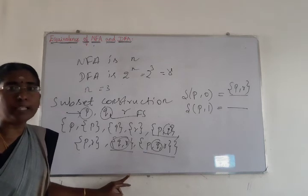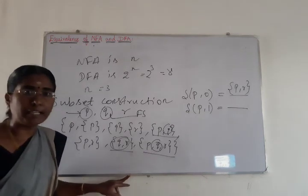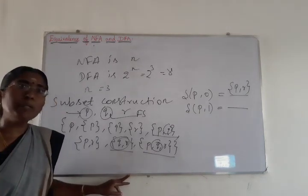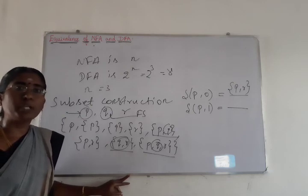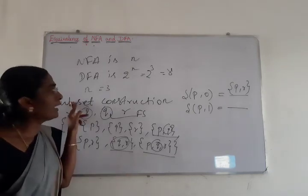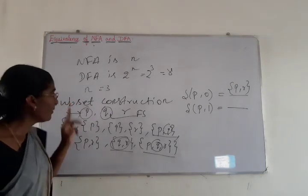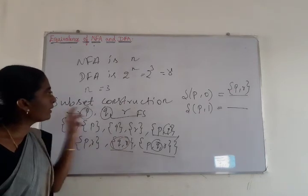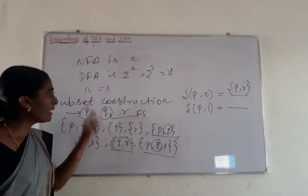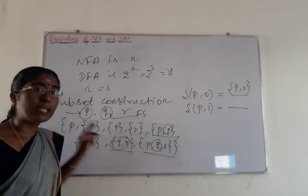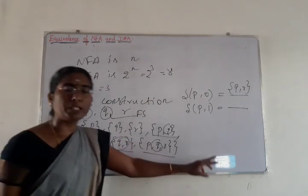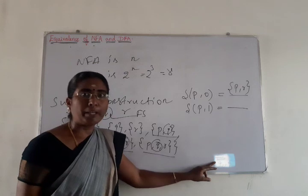Like this we construct a DFA from an NFA. If the number of states in the NFA is equal to N, then the possible number of states for the DFA is equal to 2 power N. The method used here is subset construction. Among all the possible states, only the states reachable from the start state are considered for constructing the DFA.